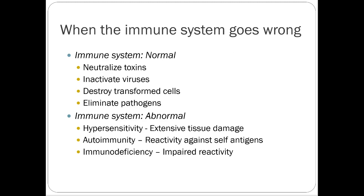When the immune system goes wrong, a normal immune system should neutralize toxins, activate against viruses, destroy transformed cells, and eliminate pathogens. An abnormal immune system causes hypersensitivity reactions with extensive tissue damage, autoimmunity attacking self-antigens, or immunodeficiency — whether from malignancy, pharmacologic manipulation, or infectious disease like HIV.